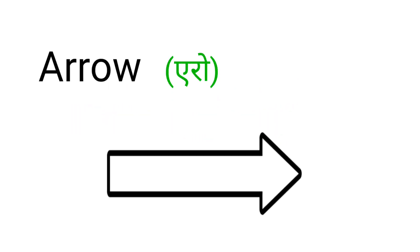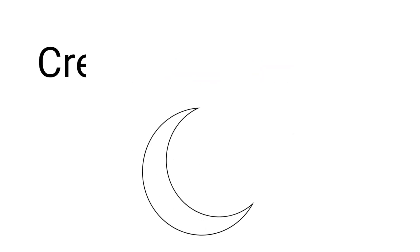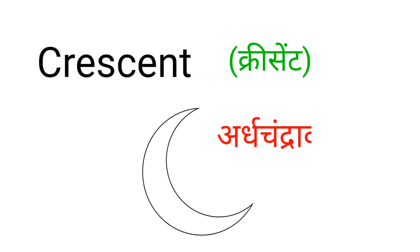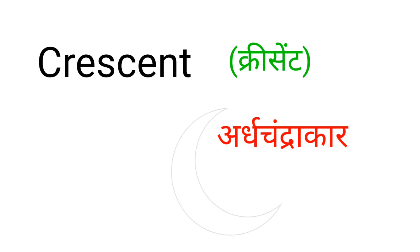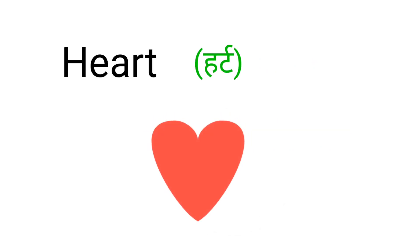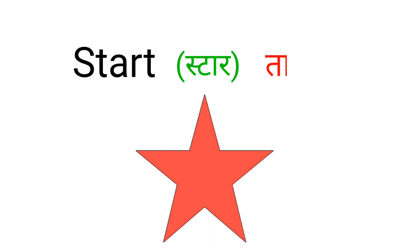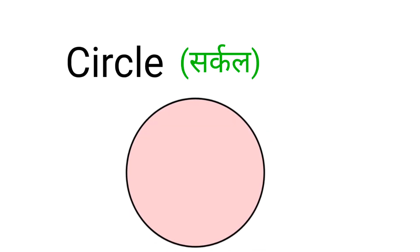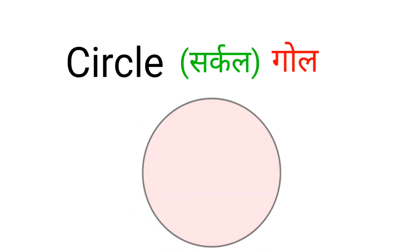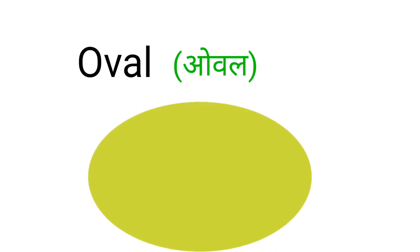Arrow — Arrow means Teer. Crescent — Crescent means Ardh Chandrakar. Heart — Heart means Dil. Star — Star means Tara. Circle — Circle means Gol. Oval — Oval means Andakriti.